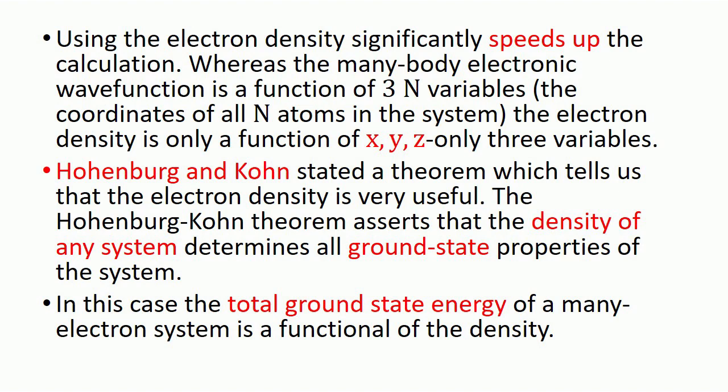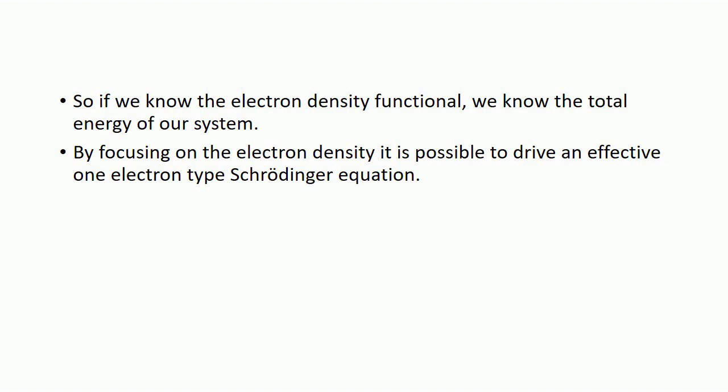The total ground state energy of a many-electron system is a function of the density. This means the total ground state energy depends upon the electron density. So if we have the electron density, we can find the total energy of our system. By focusing on the electron density, it is possible to derive an effective one-electron type Schrödinger equation.